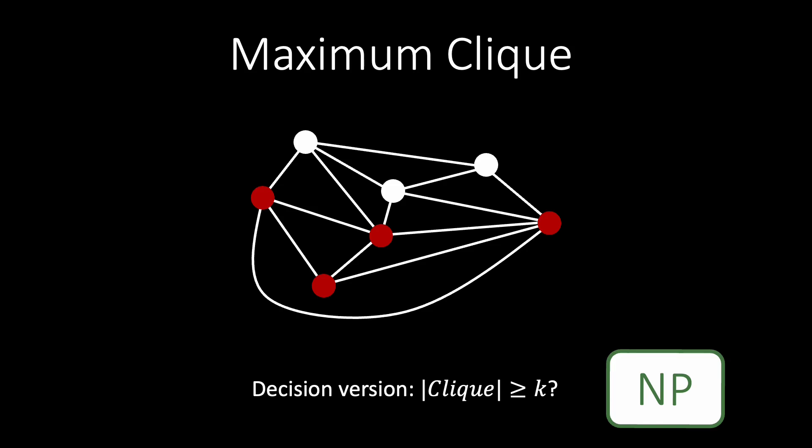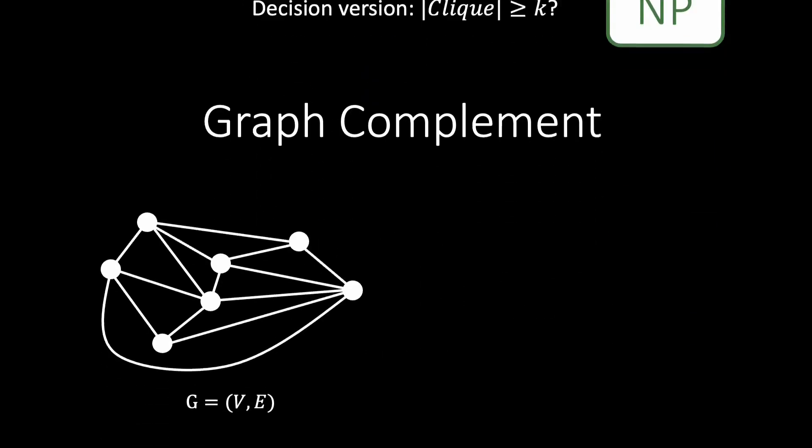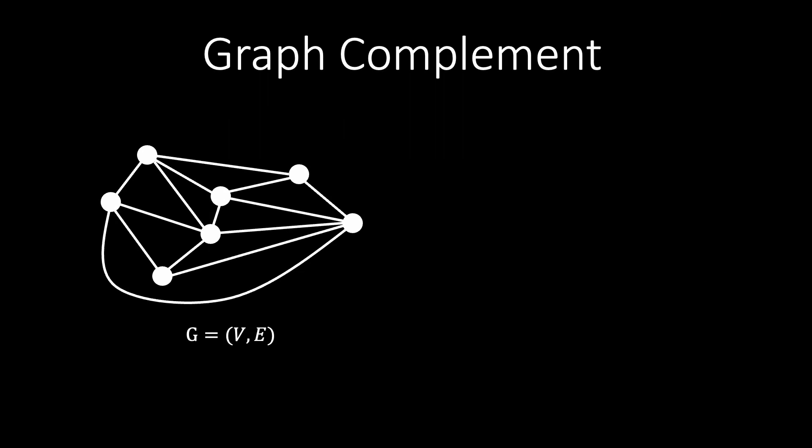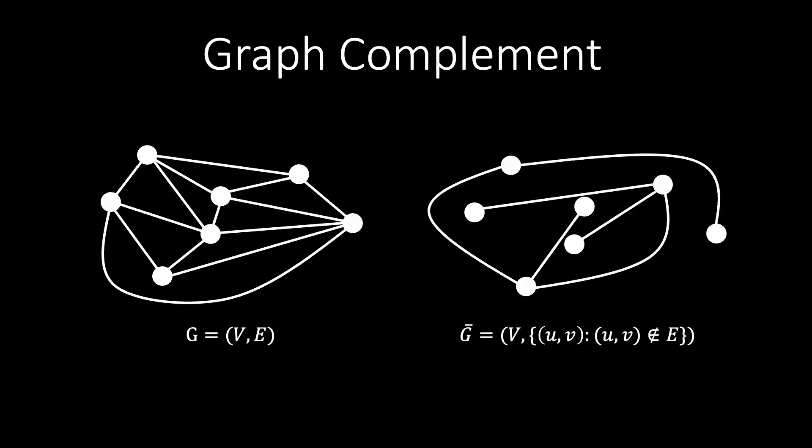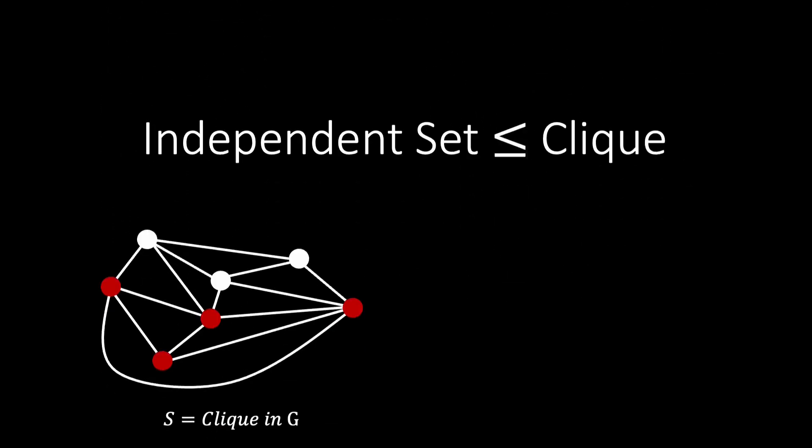We can also reduce the maximum clique problem to the independent set problem. This reduction is a little more involved than the reduction from vertex cover to independent set. Given a graph G, the complement of G is a graph that has the same vertex set, and two vertices are connected if they are not connected in G. The reduction from independent set to clique uses the complement graph.